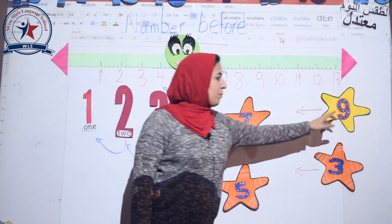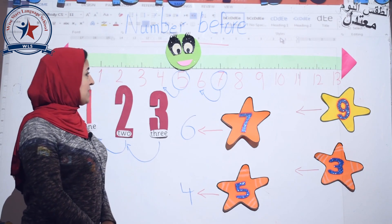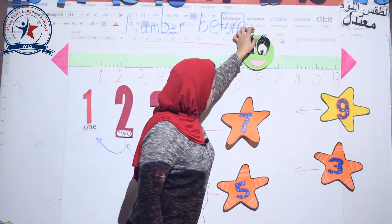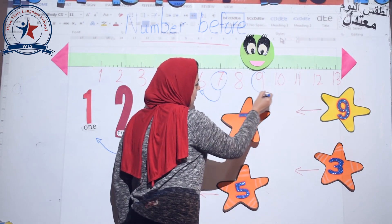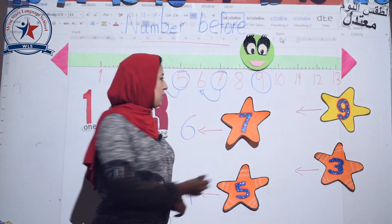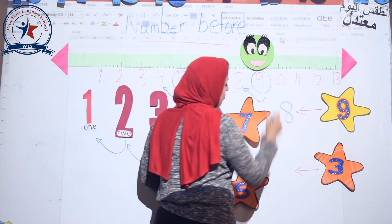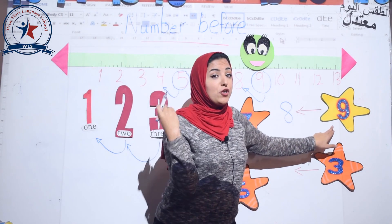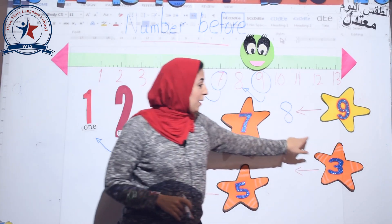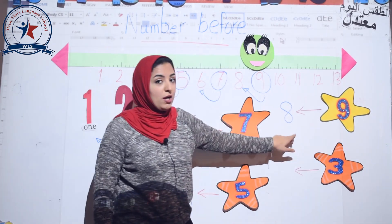And now I have number nine. Mr. Number Line, could you please show us where is number nine? It's here. Circle number nine. What is the number that comes before nine? Eight. So before number nine, number eight.